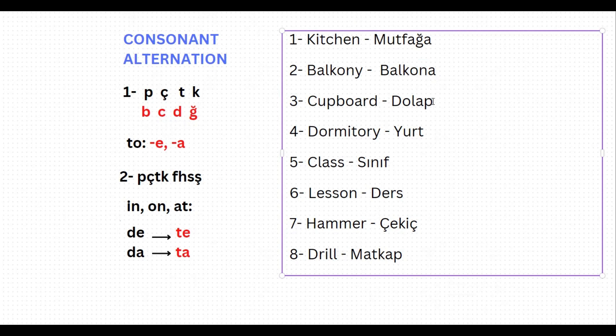Let's check the third one. 'Cupboard' is 'dolap' in Turkish. If you want to say 'to the cupboard,' then it is 'dolap-a.' Let's check the last letter, which is p — one of peçeteğe — so it needs to alternate to b. To the cupboard: dolaba.